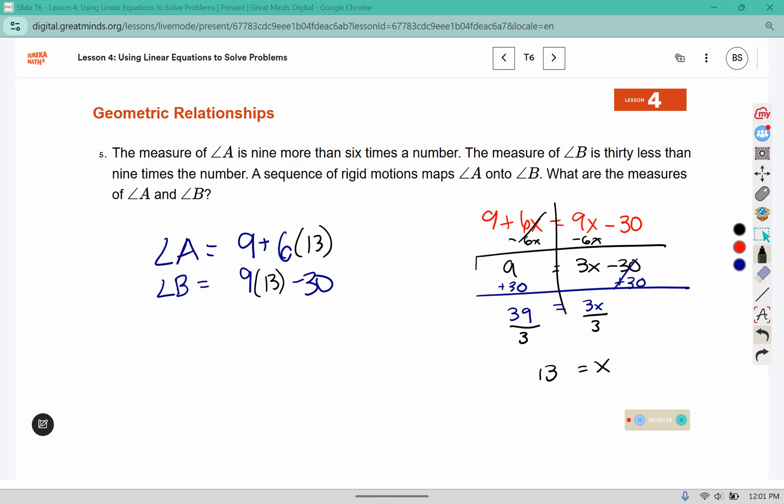So x is going to be replaced with 13. So we'll do 6 times 13 first, and then add 9. 6 times 13 is 78 plus 9 is 87. Then here we're going to take 9 times 13, which is 117, and subtract 30, which is also 87. So we know that since they came out equal, we have the correct solution. They are both 87 degrees.